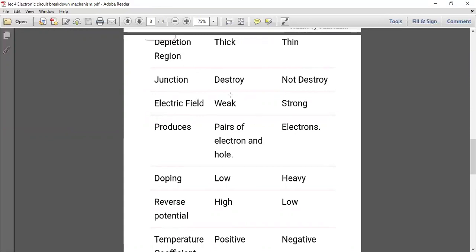Electric field: avalanche has a very weak electric field, and zener has a very strong electric field because the main conductivity takes place because of electric field in zener breakdown. In avalanche, conduction takes place because of pairs of electrons and holes, and in zener, the conduction takes place because of electrons only.